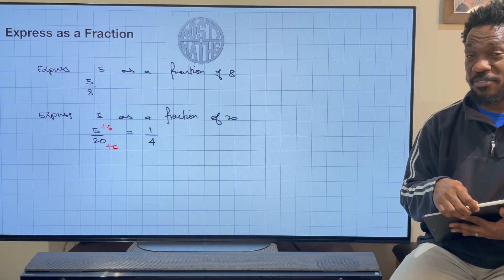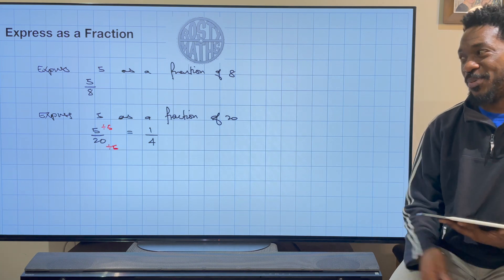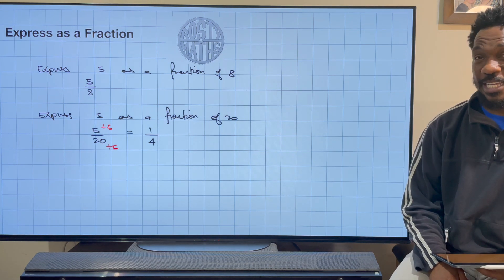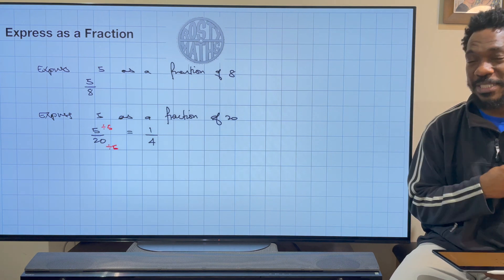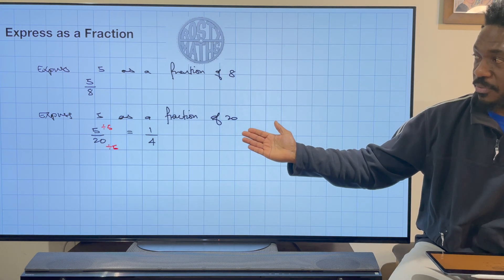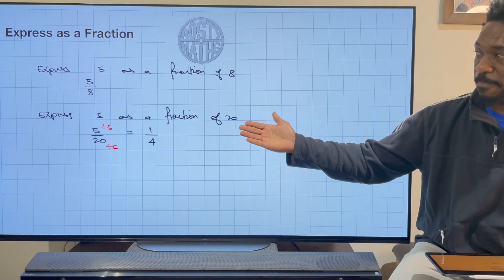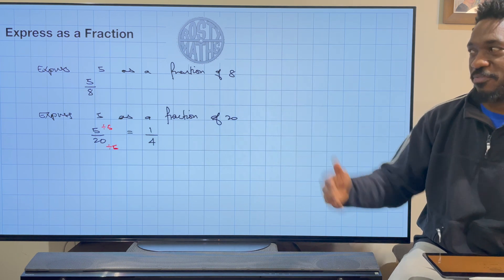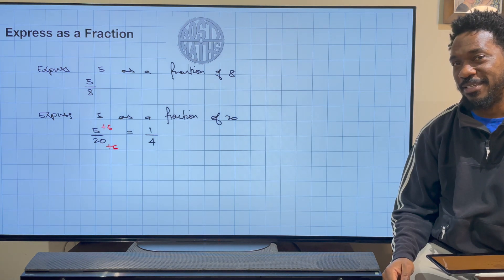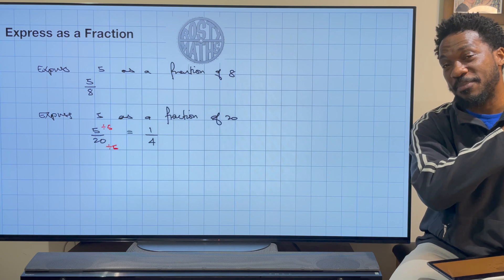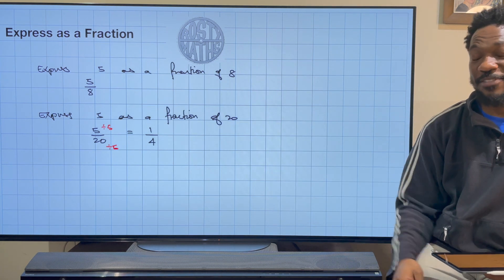So 5 really is a quarter of 20. Cool, right? It's literally that straightforward. Do you see how it all ties in? Also, a quarter is an equivalent fraction of 5 out of 20. If you don't know what that means, click on my pop-up banner up there and go have a look at the video I've made on equivalent fractions.